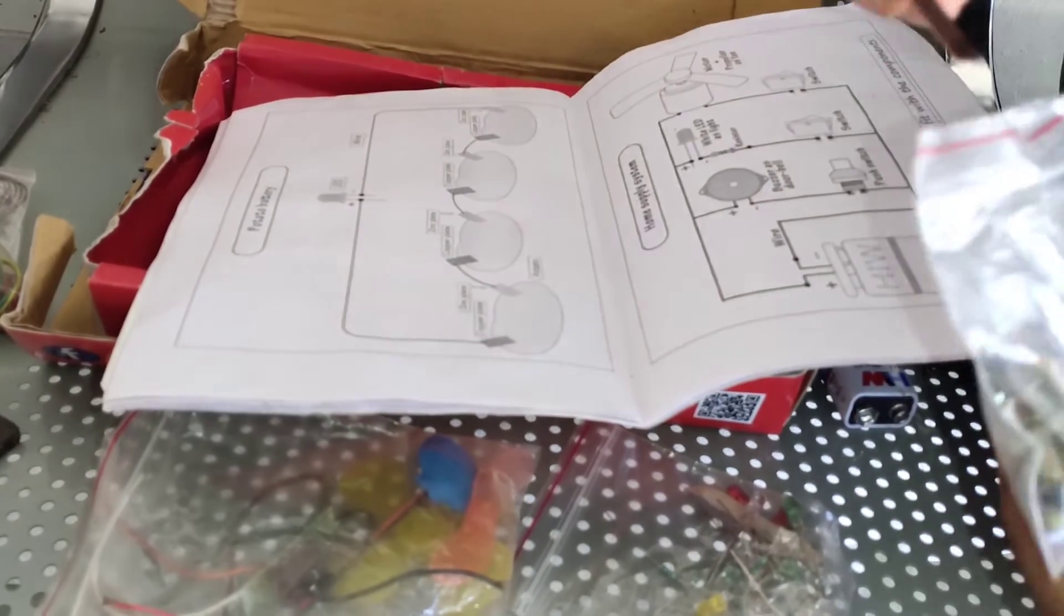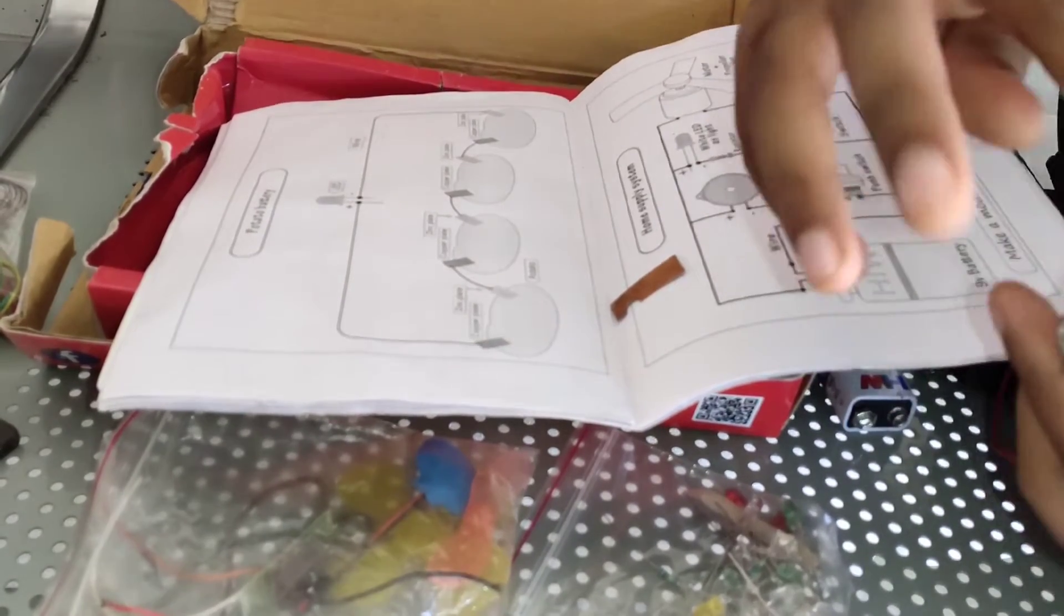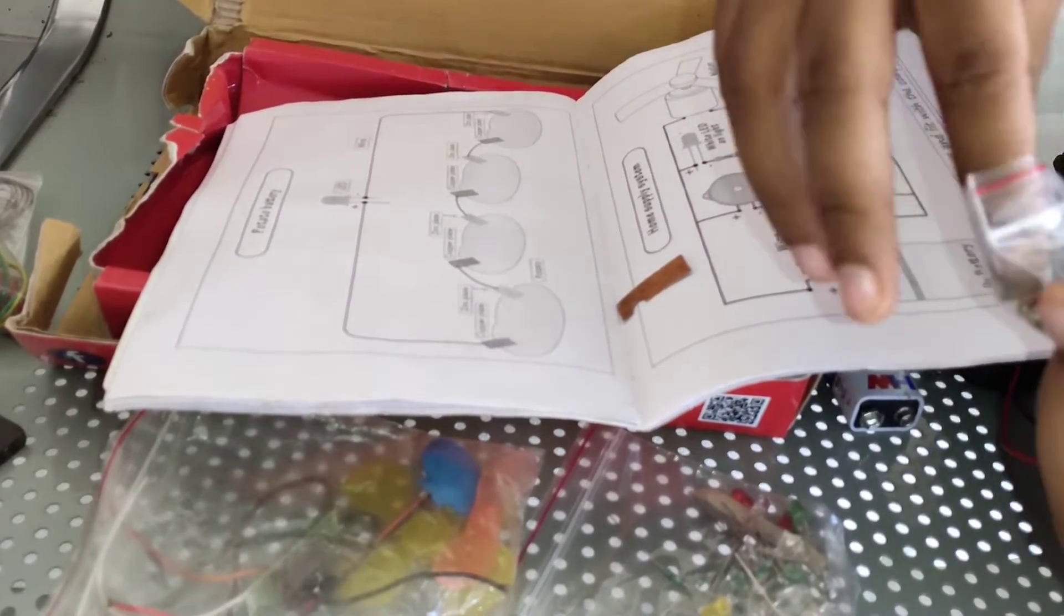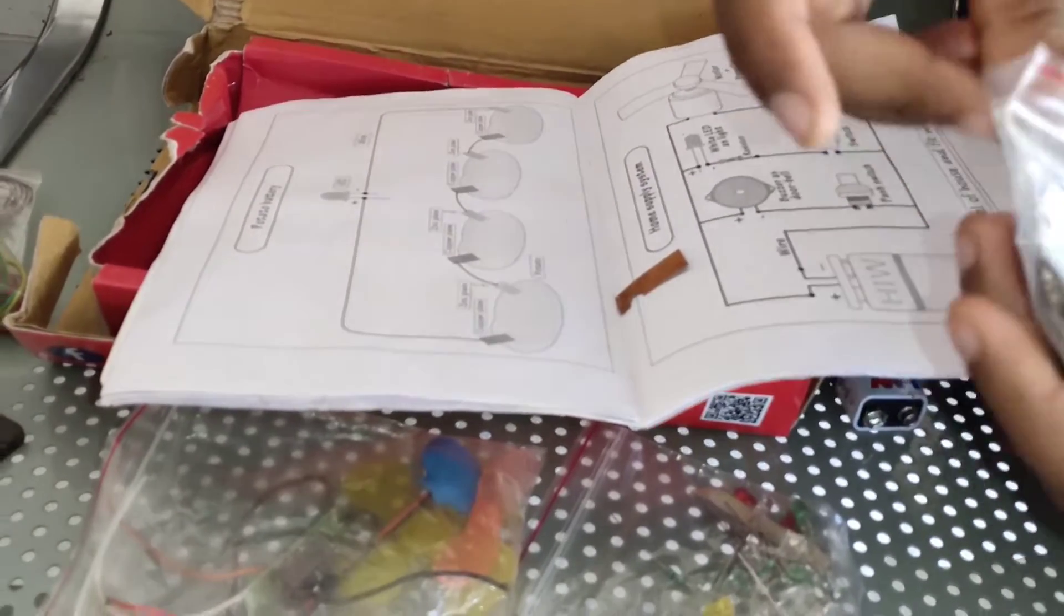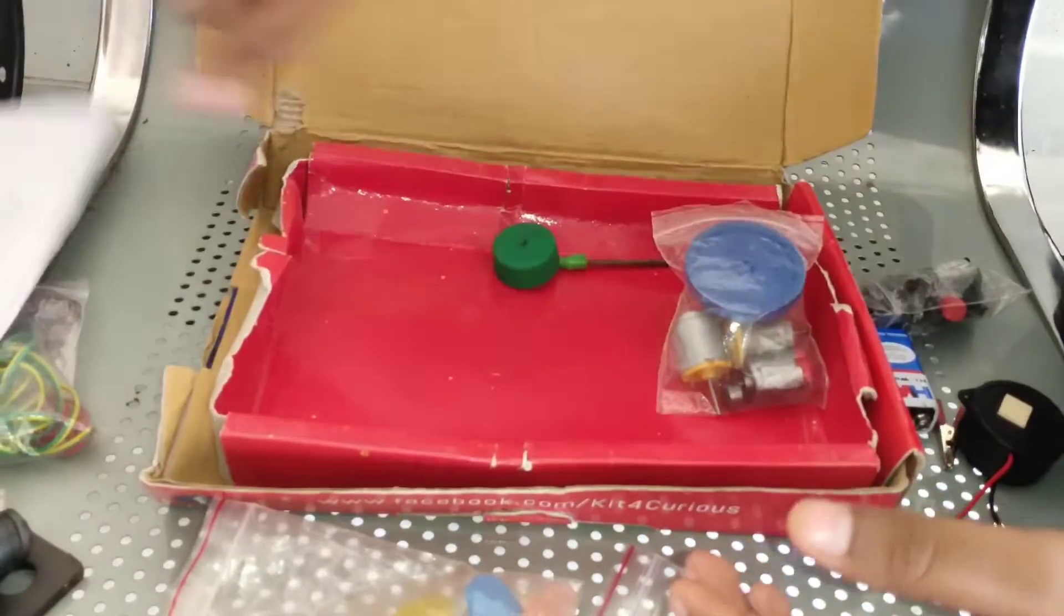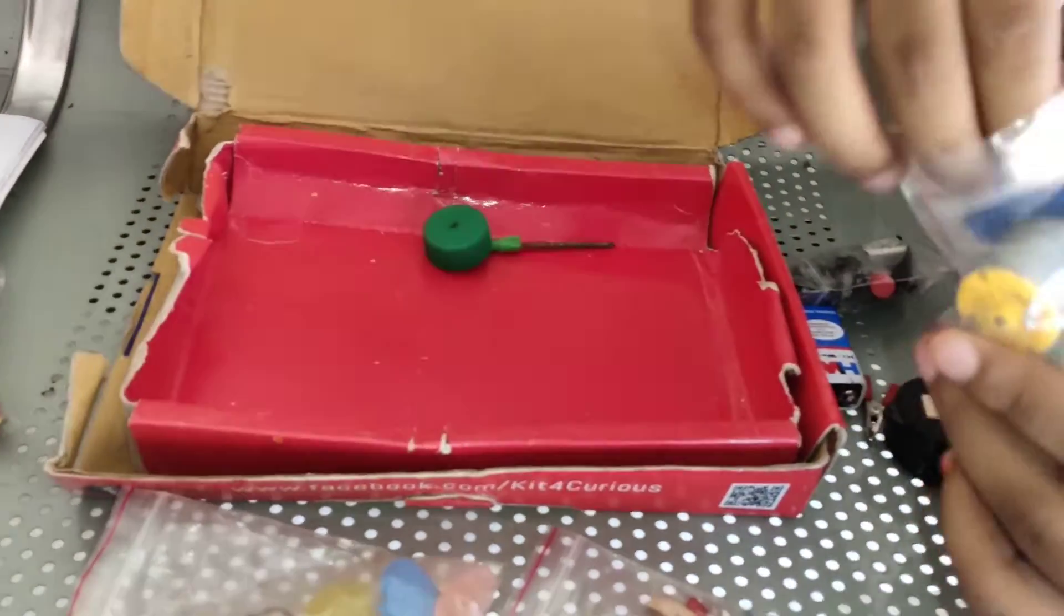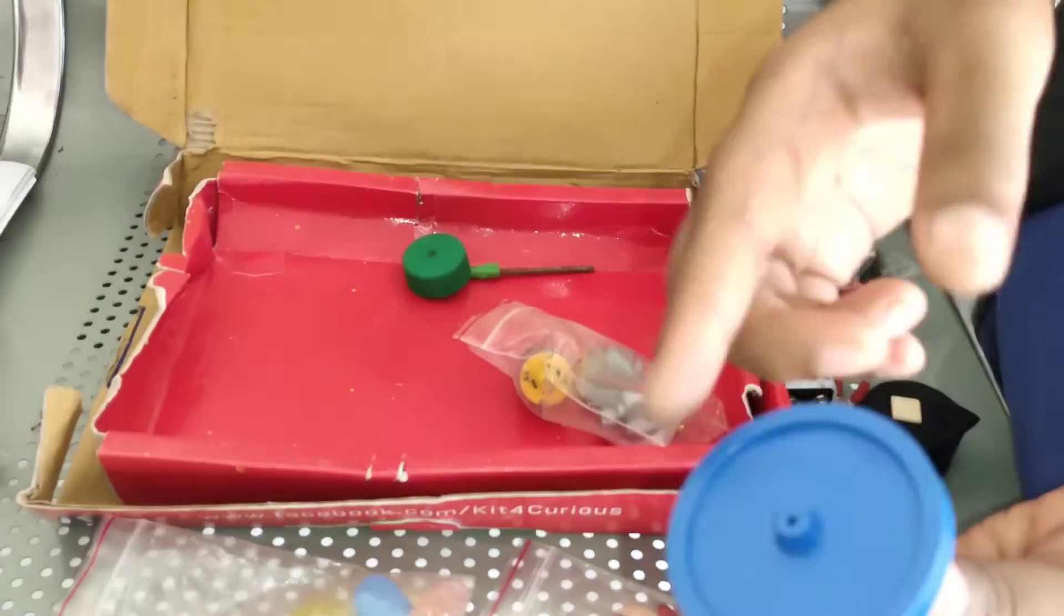This is a copper plate. This is a zinc plate. This is a copper plate. This is a zinc plate. This is a little screws. Then next one, this is a mini motor.